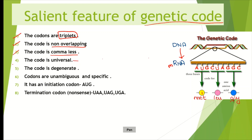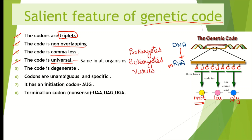The fourth point is the code is universal — the codons of mRNA code for the same amino acids in all organisms, whether we are talking about prokaryotes, eukaryotes, or viruses; it remains the same in all organisms. For example, AUG codes for methionine whether the organism is a prokaryote, eukaryote, or a virus.